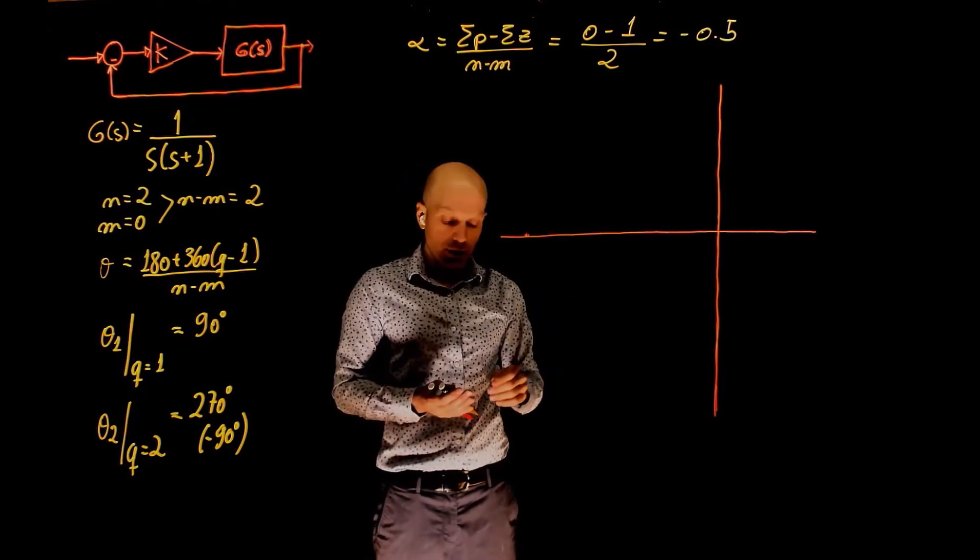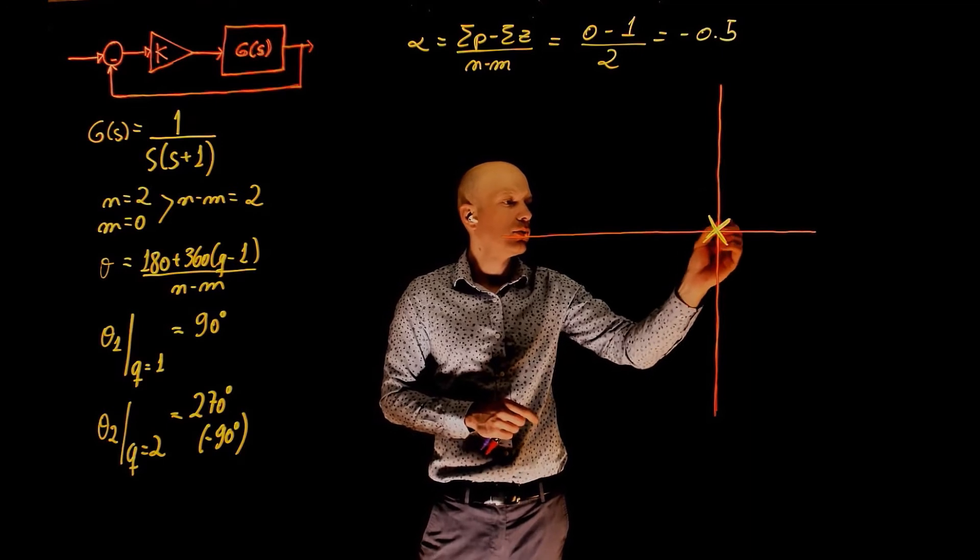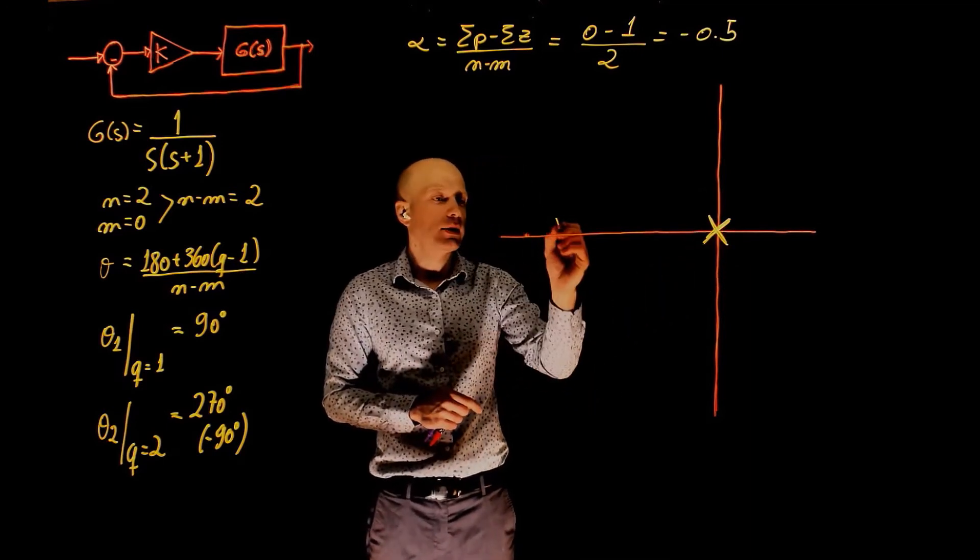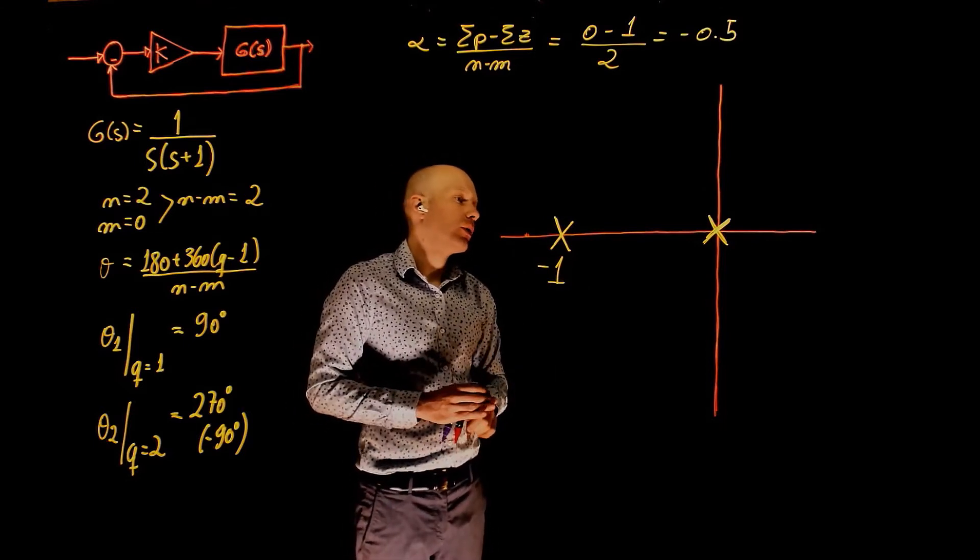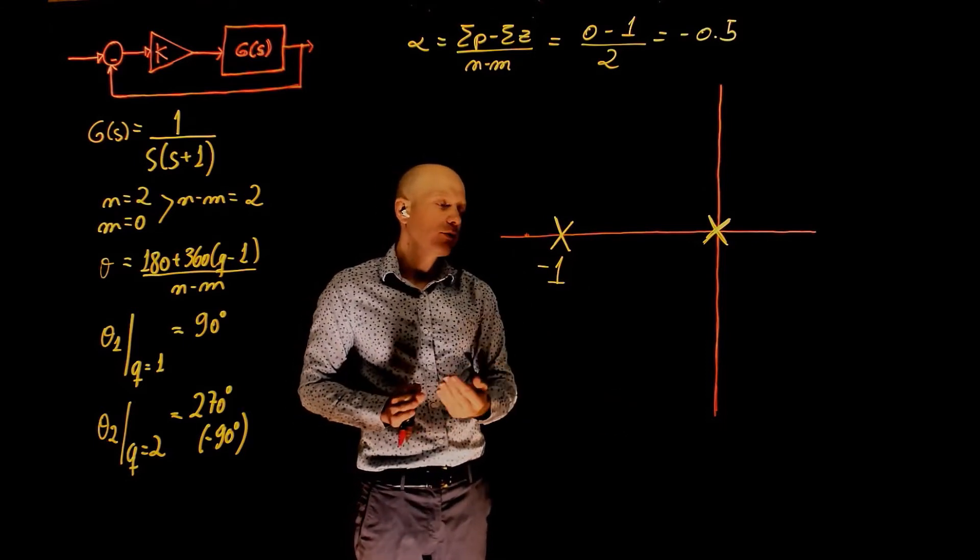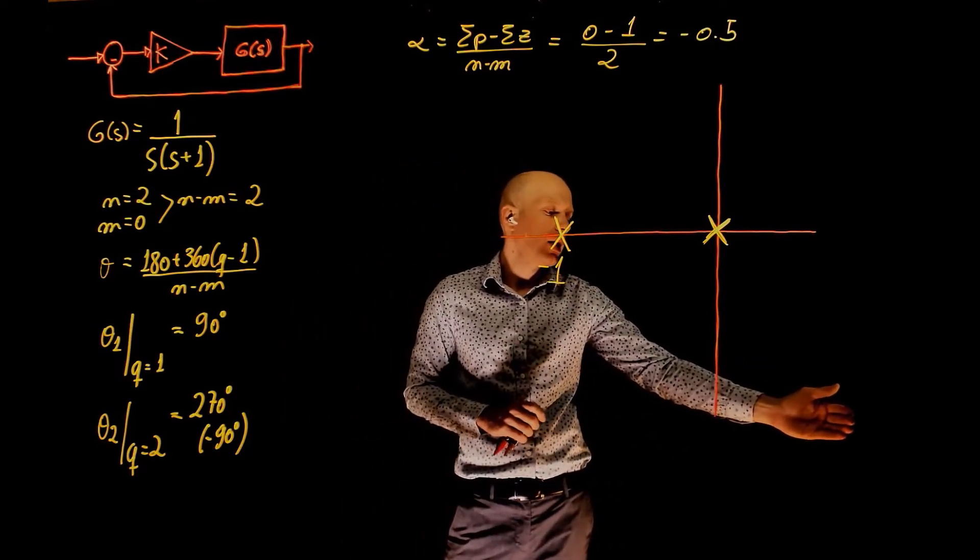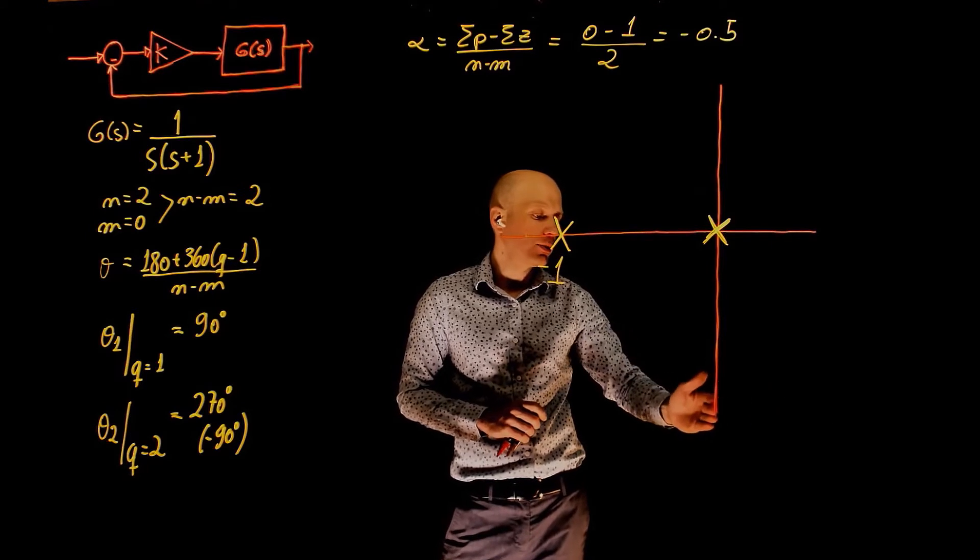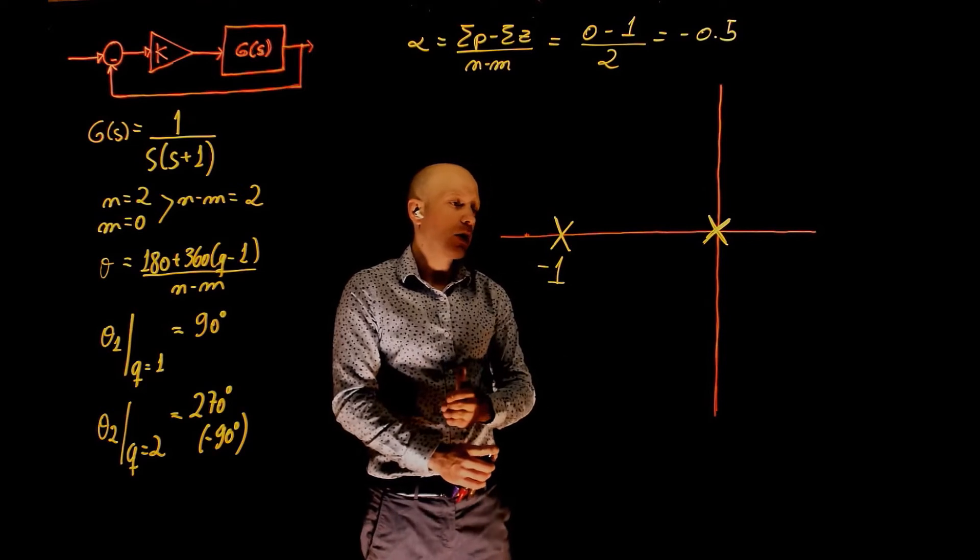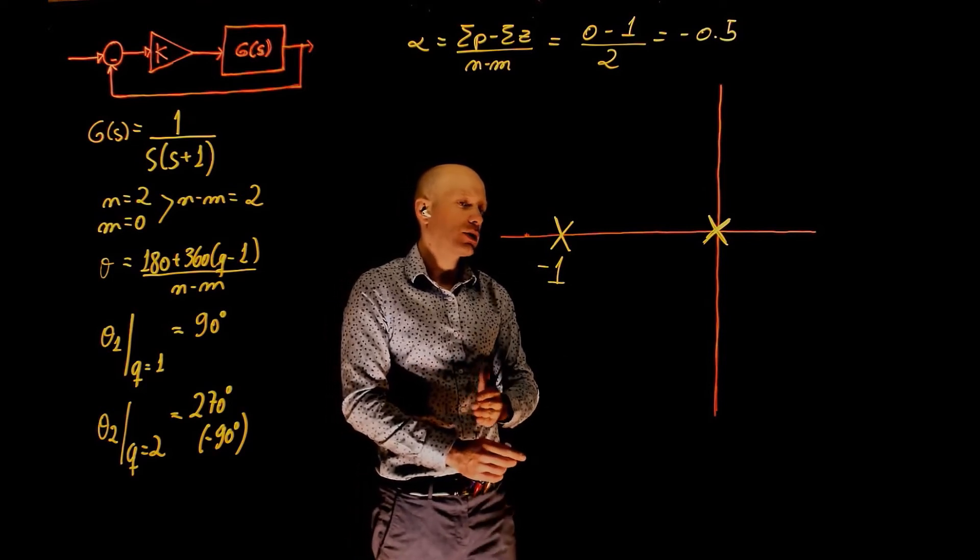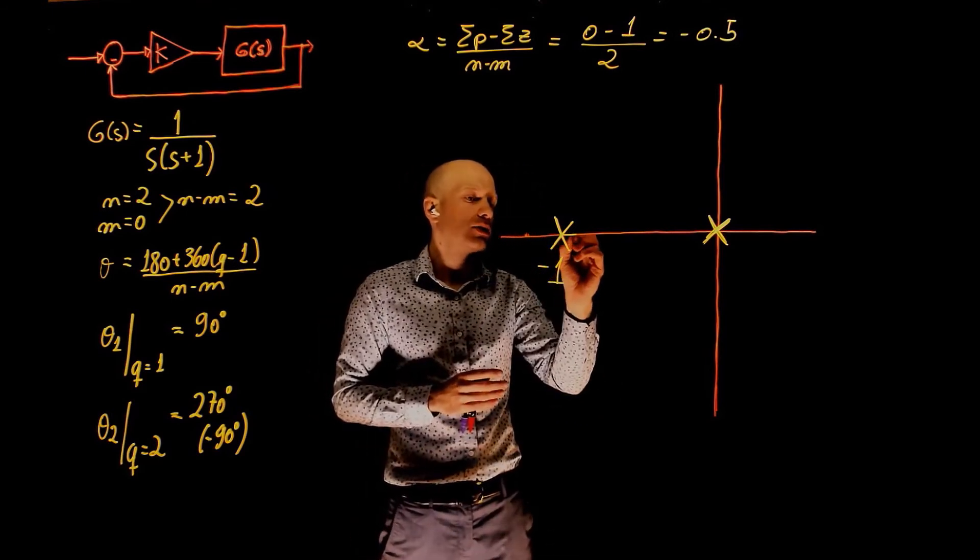Now let's place the poles and zeros on the plane. We have a pole at 0 and we have a pole at negative 1. Where is the root locus now? The root locus is to the left of an odd number of poles and zeros. Starting from positive infinity, as we count, we have 0 up to here. The count now becomes 1 and when you cross negative 1, the count becomes 2. So the only odd segment is between these two poles, so the root locus exists between them.